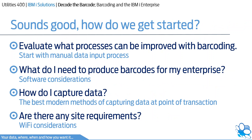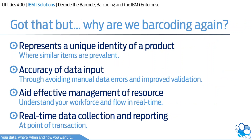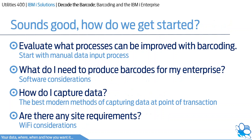Now that we understand barcodes and have a good idea of which to adopt for particular processes, let's discuss the benefits. Barcoding provides a unique identity for a part, enabling more accurate picking with less confusion and fewer faults. The introduction of barcoding systems has an immediate impact on data accuracy, with over 99% accuracy achievable. Using the right technology, data collection and reporting can be completed in real time, supporting better decision-making at point of process, lean operations, and live analysis of results.